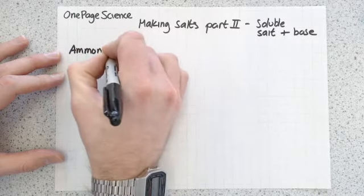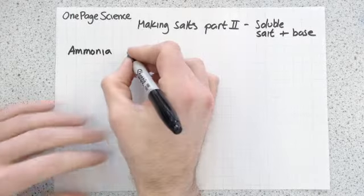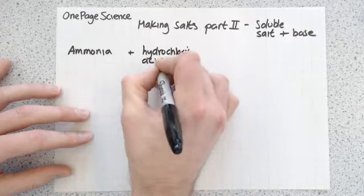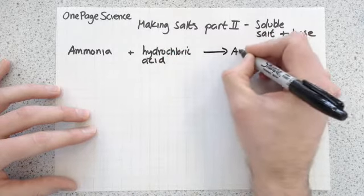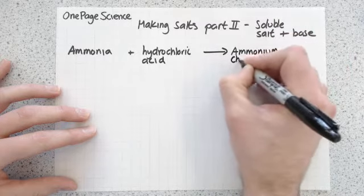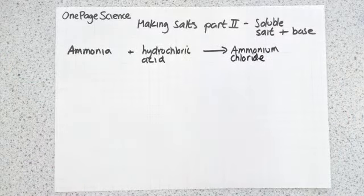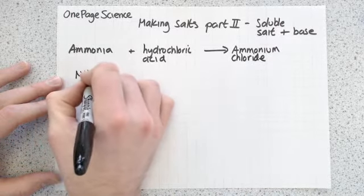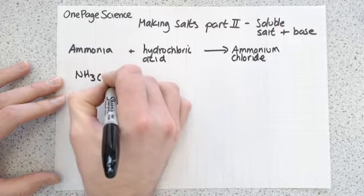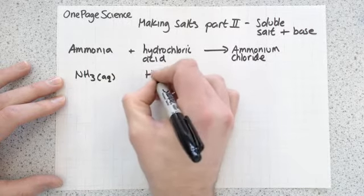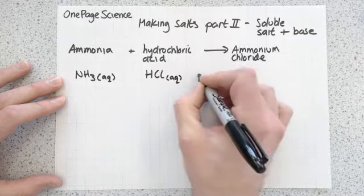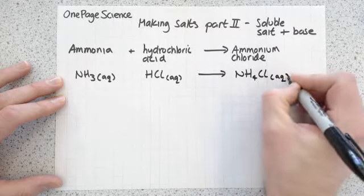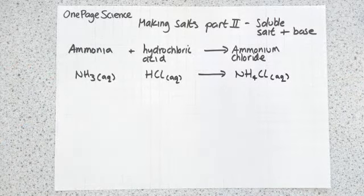An example would be taking ammonia and reacting it with hydrochloric acid. The product you make is called ammonium chloride. All these things are in solution, so we write the symbol equation as: NH3 (aq) + HCl (aq) → NH4Cl (aq).